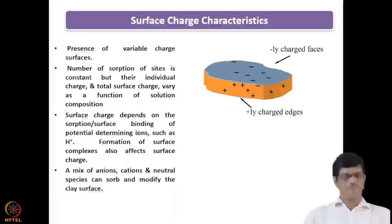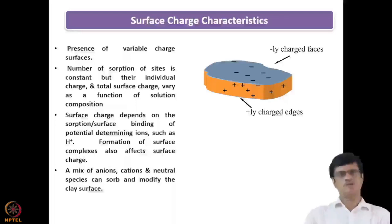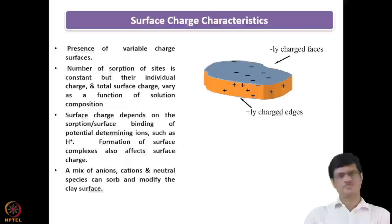We have already discussed about the point of zero charge, how it has to be determined experimentally, whether by potentiometric titration or by zeta sizer, which gives the zeta potential determined as a function of the pH values. From that we can find out the point of zero charge, the PZC values.